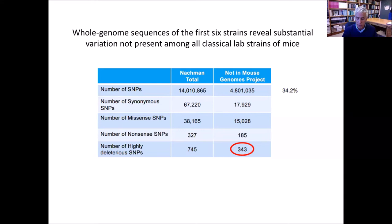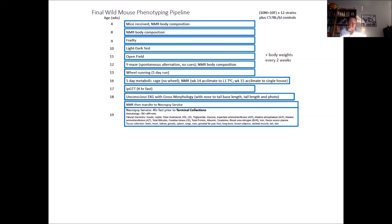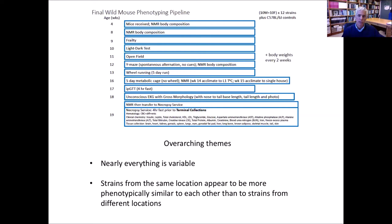We're phenotyping these strains at the Jackson Lab using a standard battery of phenotyping approaches. Two overarching themes have emerged: first, nearly everything is variable — these strains are remarkably variable and different from existing strains. And in general, strains from the same location appear to be more phenotypically similar to each other than strains from different locations. If you're a mouse geneticist, I encourage you to look at these strains.